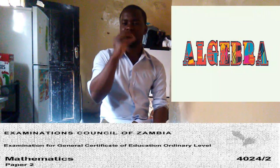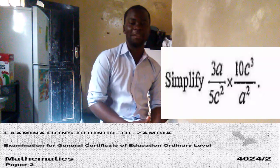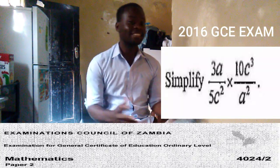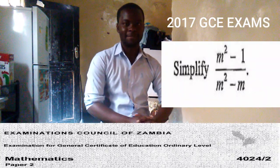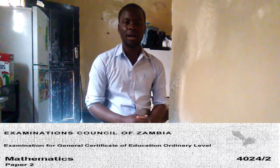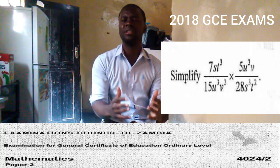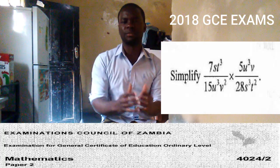Lastly, is the concept of algebra. Always algebra comes in mathematics paper 2 final exam, yes. And it's actually two marks. But if you are lucky, they bring even three questions on algebra, where they ask you to simplify an algebraic expression. It's a very simple concept, and you'll get two marks.